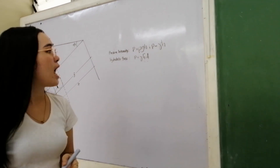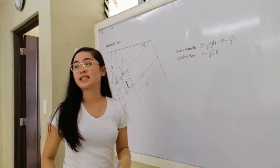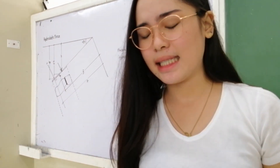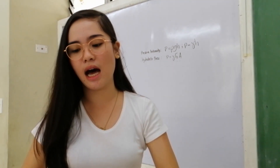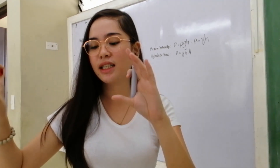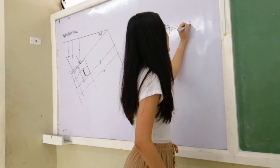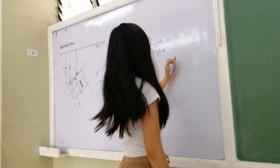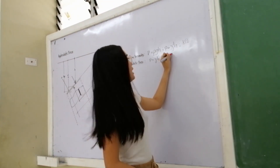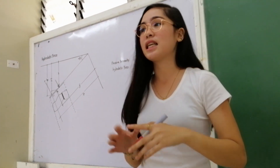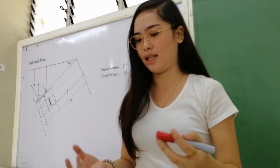This is the area being submerged. The h-bar there is the centroid of the area. You must emphasize that there are differences in units: for pressure intensity, we have kilopascal, and for hydrostatic force, we have kilonewton.